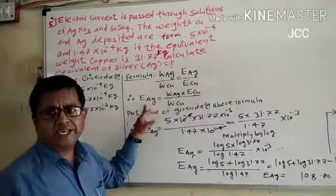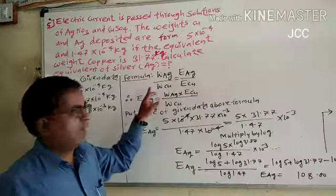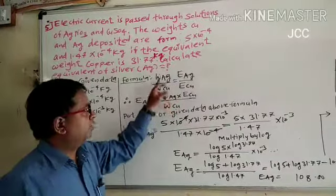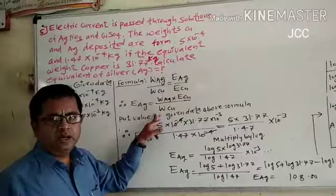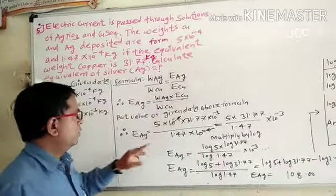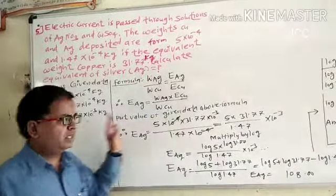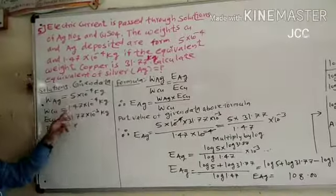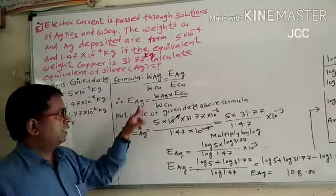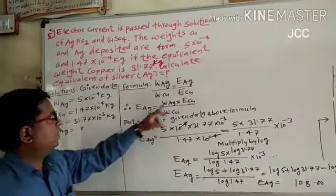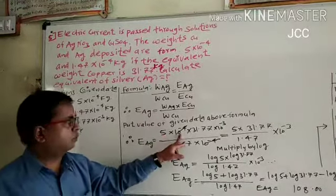When factors multiply, the formula becomes: weight of element 1 times equivalent weight 2 divided by weight of element 2. The formula develops this way.